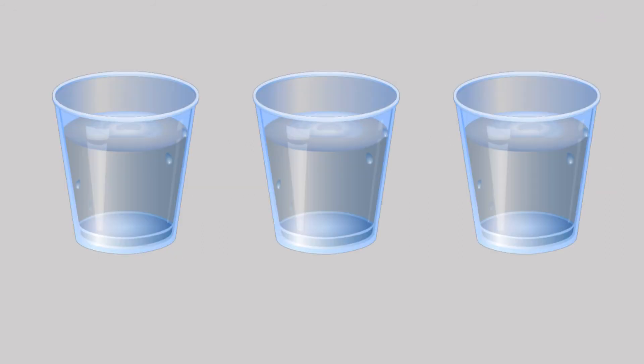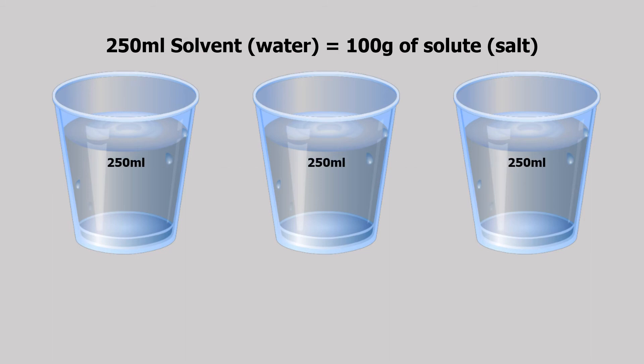For example, 250 ml of water can dissolve up to 100 grams of salt. So we have three glasses. Each contains 250 ml of water. Then each glass will have different amounts of solute or salt respectively.